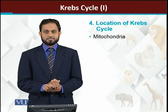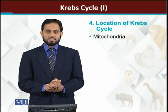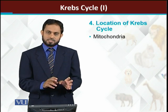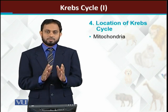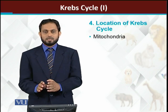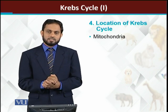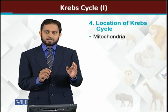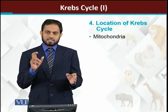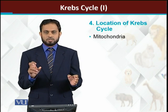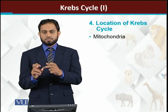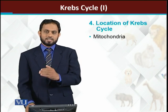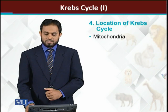What is the location of the Krebs cycle? We know that glycolysis takes place in the cytosol. The Krebs cycle, however, always takes place in the mitochondria. This means that pyruvate, produced in the cytosol during glycolysis, must move into the mitochondria, where the Krebs cycle will then run.